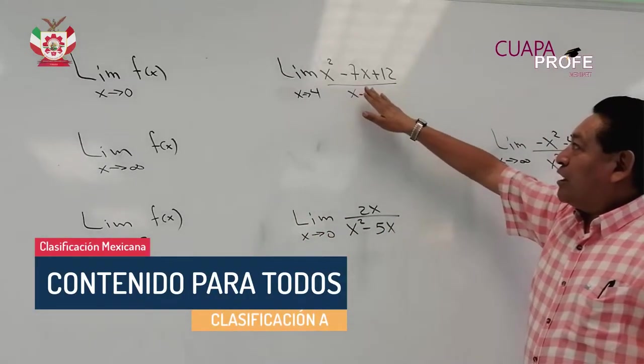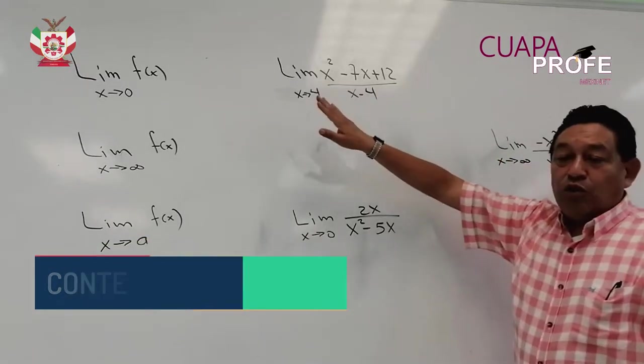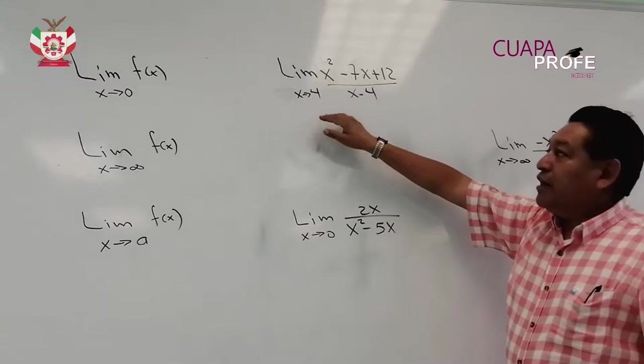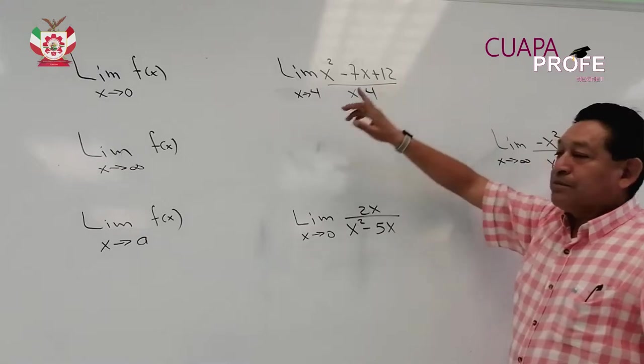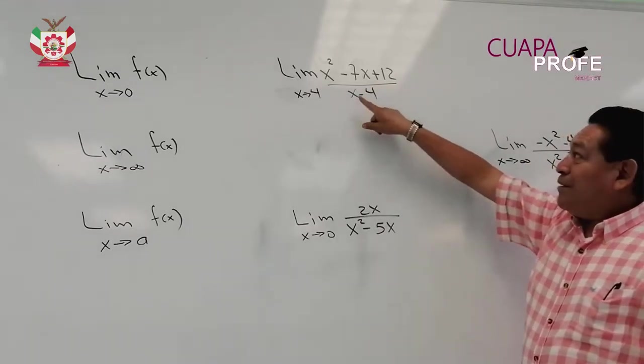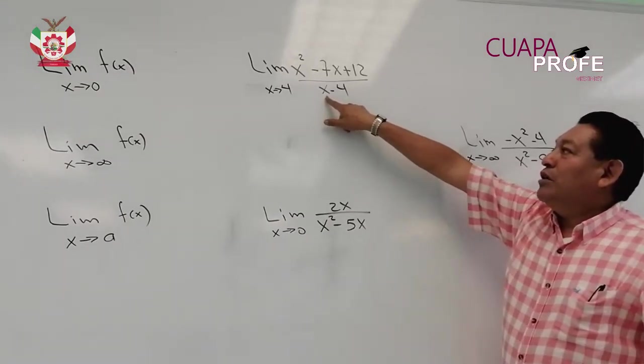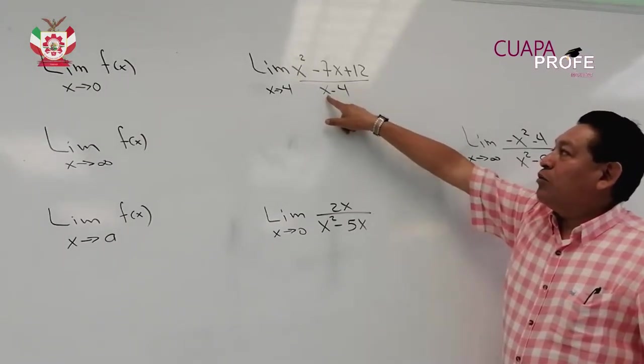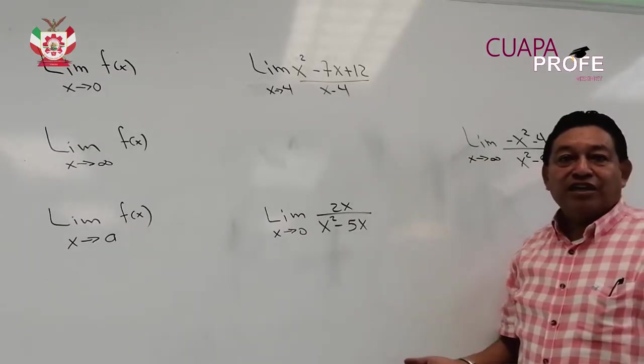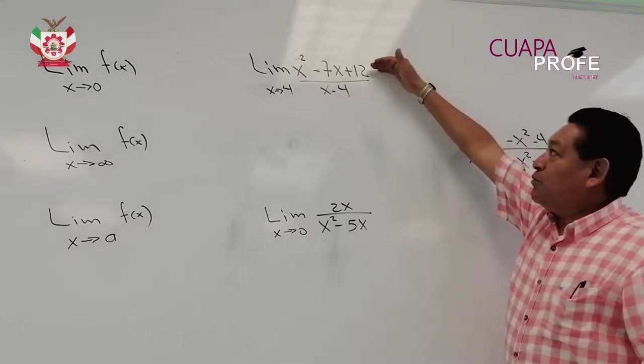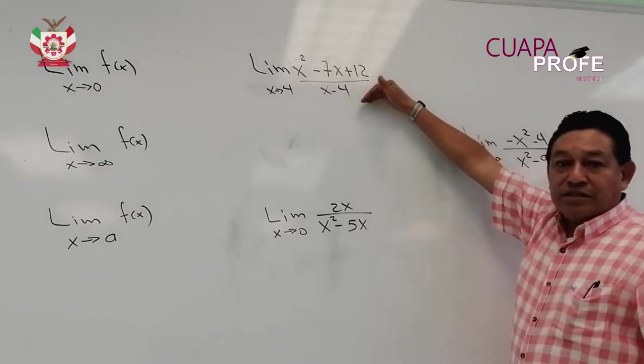Por ejemplo, si yo tengo el límite de x cuadrada menos 7x más 12 sobre x menos 4, cuando x tiende a 4, lo primero que se sugiere es sustituir este valor de 4 en la variable x. Cuando nosotros escribimos en lugar de x en el denominador 4, automáticamente tenemos que 4 menos 4 ya se canceló, nos da cero, y no existe un cociente de un número entre cero.